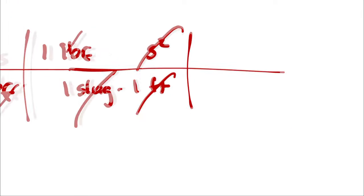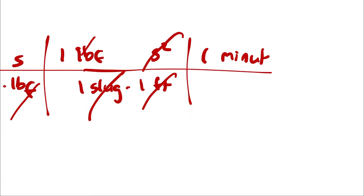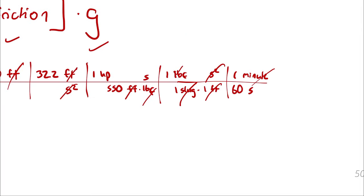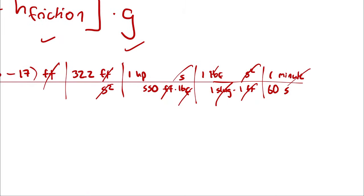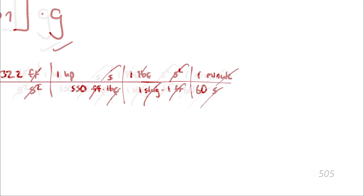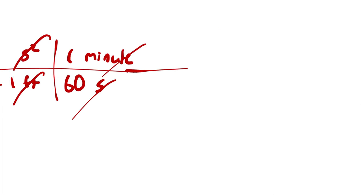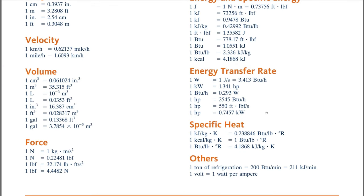Then if I convert minutes to seconds I will get rid of the time units and gallons to cubic feet I will get rid of the volume units. So one minute is 60 seconds.